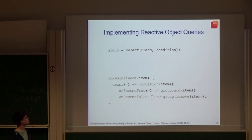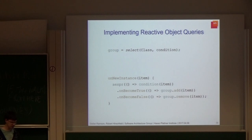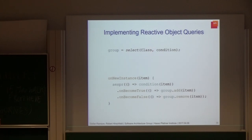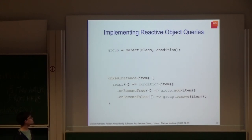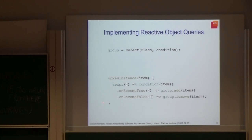Let's apply this to our initial example of reactive object queries. We had group membership that depends on a condition. When implementing this with active expressions, the change detection is reduced to a simple method: whenever we get a new instance of a class, the on-new-instance method is called. We then ask the active expression to monitor the condition parameterized with this item. Whenever the condition becomes true, we add the item to the group; whenever it becomes false, we remove it from the group. This simply keeps the group membership consistent with the underlying system state.